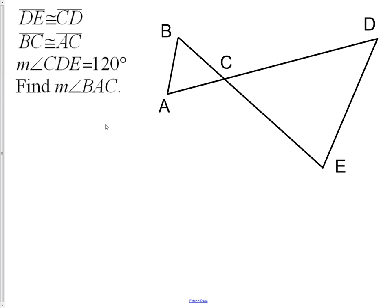Here we have a problem. We have DE is congruent to CD, BC is congruent to AC, and we have a measurement of an angle. We want to find the measurement of another angle. The first thing you should do with these types of problems is mark the given information onto the picture.